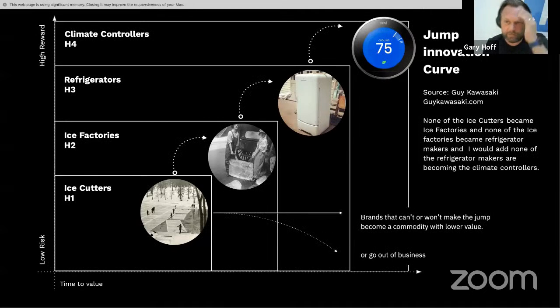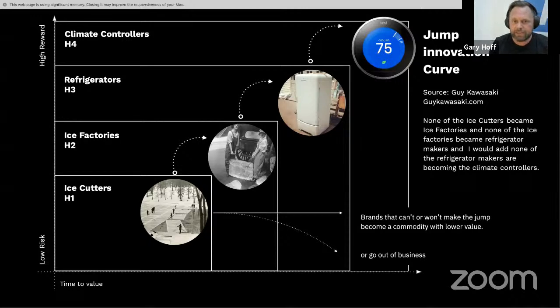To make this obvious, you may have heard of Guy Kawasaki, works for Apple, super smart guy, brilliant in the startup world. He uses the ice cutter analogy. Ice used to be harvested on lakes in the winter. It was cut into sheets, wrapped in straw, and then shipped wherever it needed to go. None of those ice cutters became ice factories. So when ice was made in factories, it was taken by a block, dropped off at someone's door.